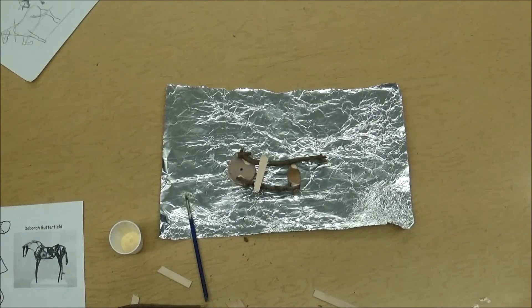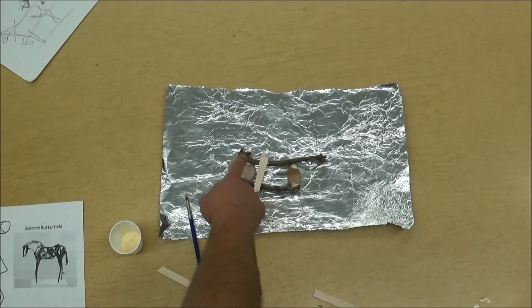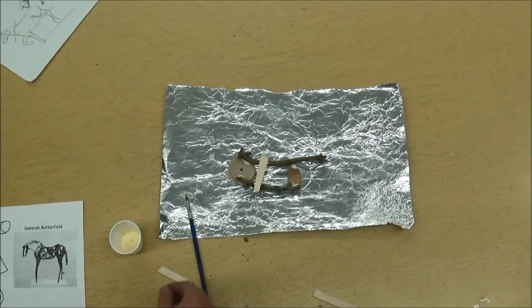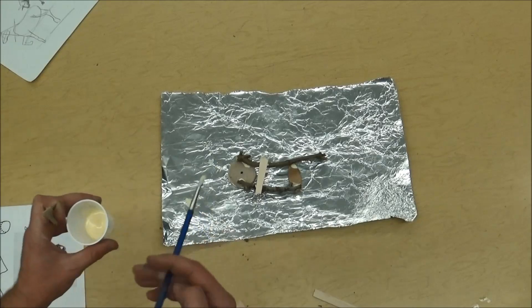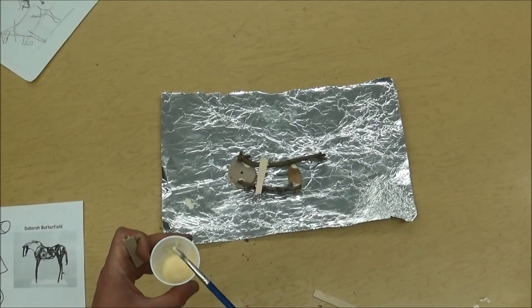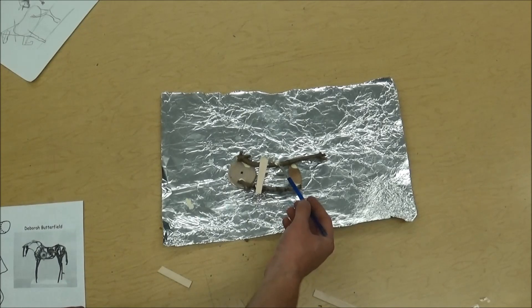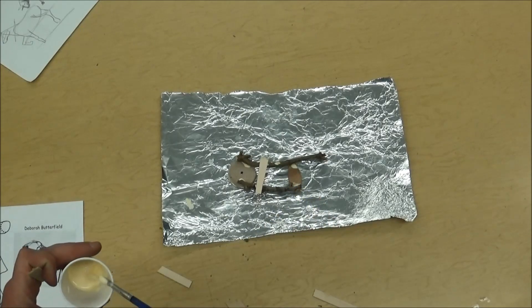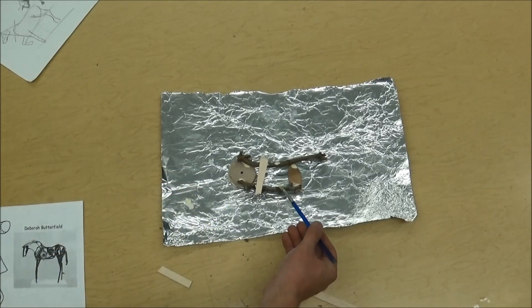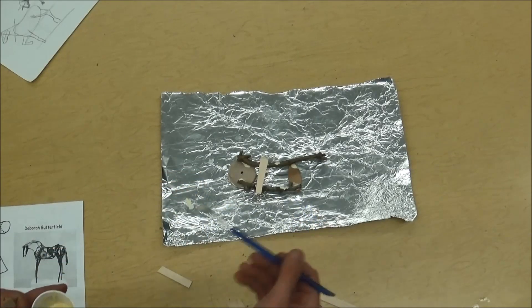So when you're done with the horse's body and it looks good to you, remember this is the body, so the neck and the head will go this way. That's part of the tail. But as soon as you like it and you're happy with it, you're all set. All we have to do today is the body. If you want to move on to other things, you can. But try to find the right pieces of wood that look like the horse you want to make.